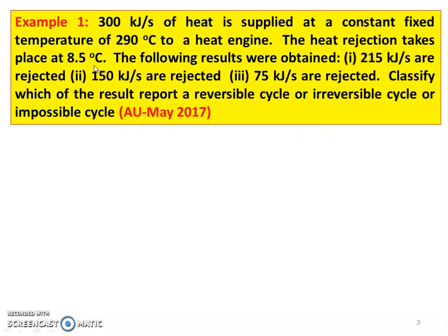First example: 300 kilojoules per second of heat is supplied at a constant temperature of 290 degree Celsius to a heat engine. The heat rejection takes place at 8.5 degree Celsius. The following results were obtained: 1) 215 kilojoules per second are rejected, 2) 150 kilojoules per second are rejected, 3) 75 kilojoules per second are rejected. Classify which result represents a reversible cycle, irreversible cycle, or impossible cycle. This is a May 2017 question paper.